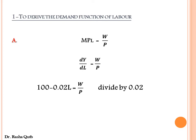How to get the marginal productivity of labor is by differentiating the production function with respect to labor. By getting the first derivative of the production function with respect to labor, it equals 100 minus 0.02L, equated with the real wages. Dividing this equation by 0.02, we get the labor demand function, which is downward sloping, indicating a negative relationship between real wages and labor demanded. The slope of this function equals minus 50.